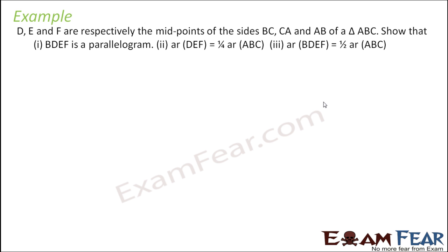D, E, and F are respectively midpoints of the sides BC, CA, and AB of a triangle ABC. This is triangle ABC.